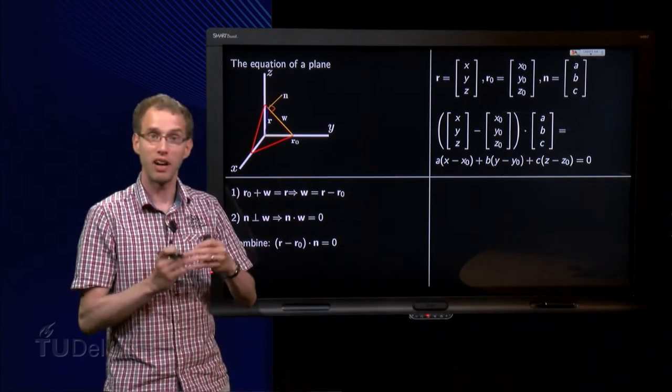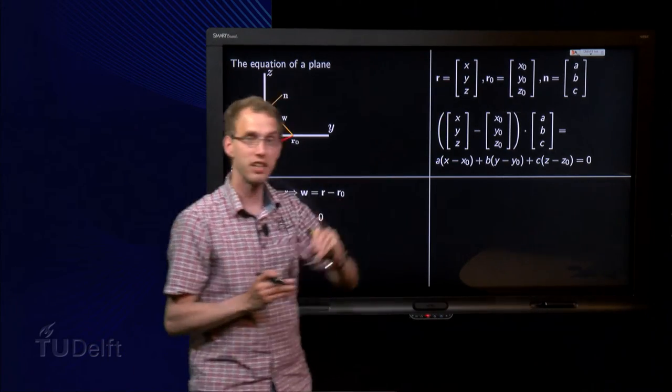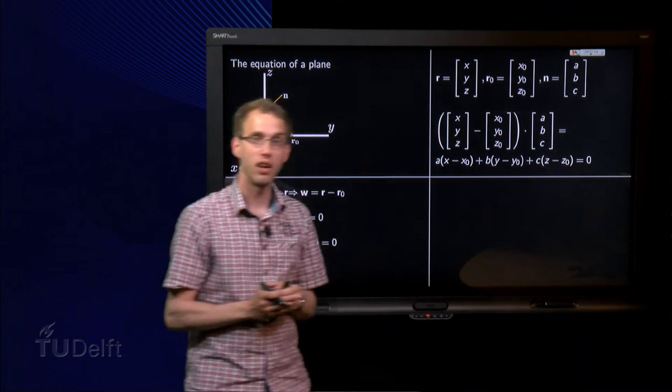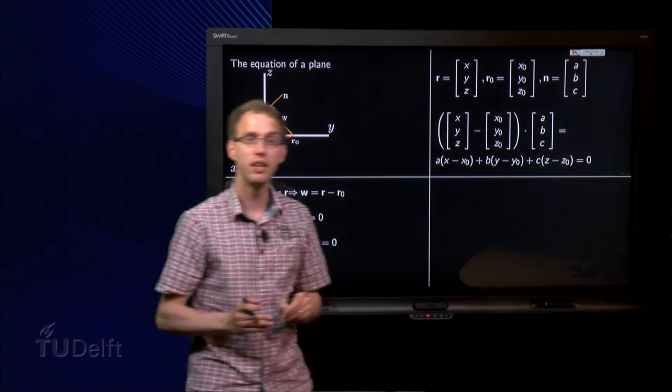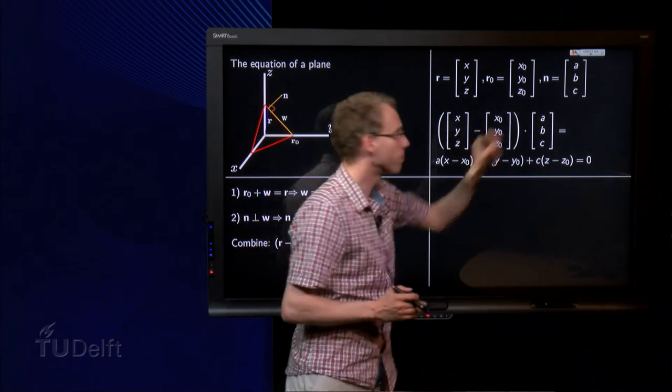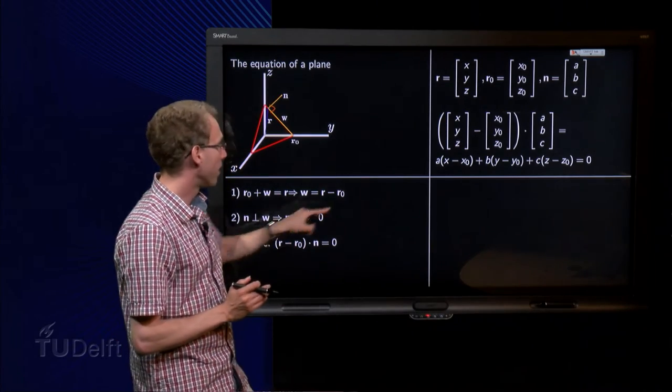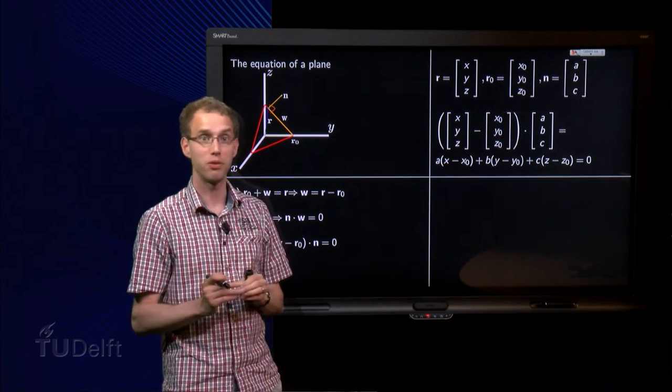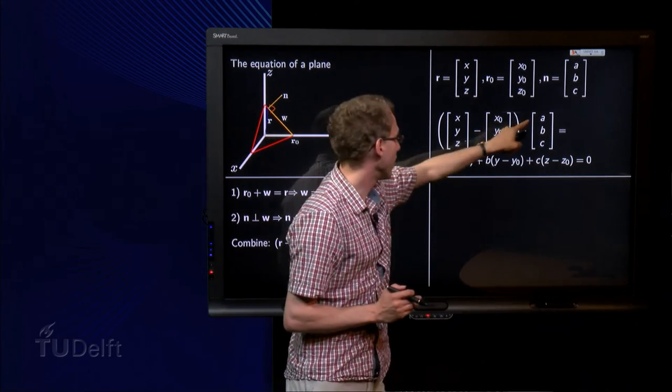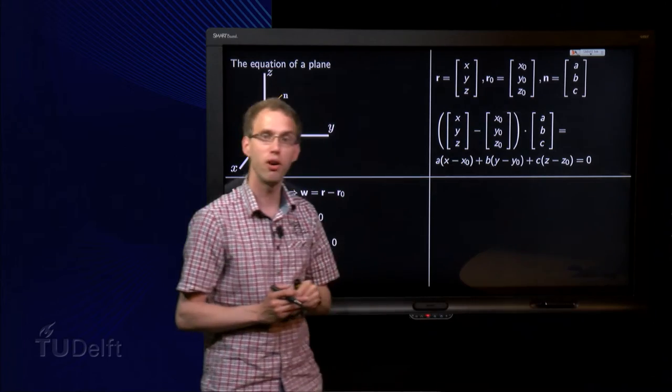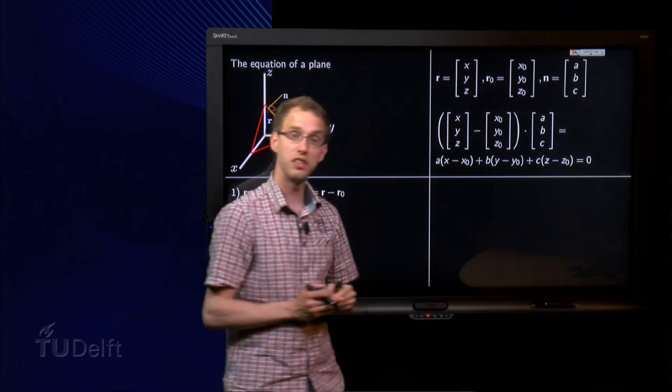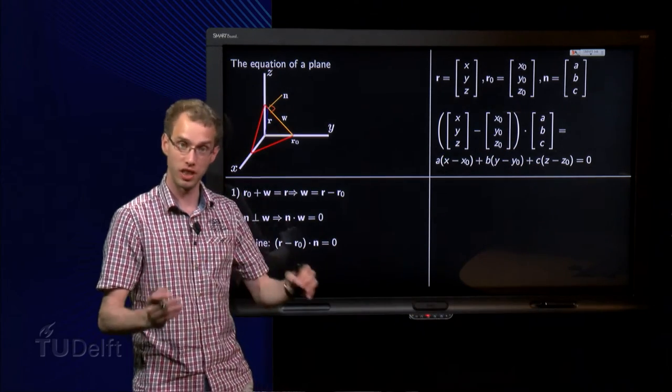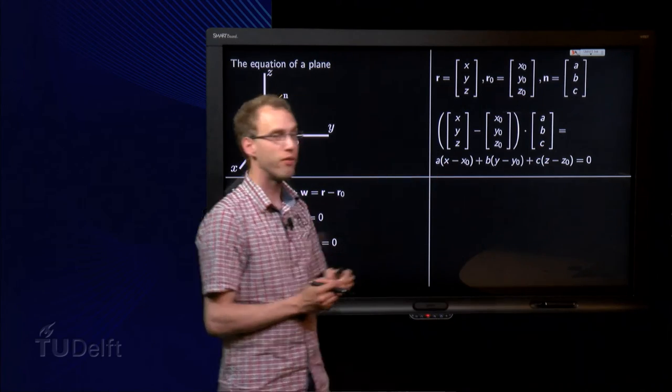Because if we write down r equals x, y, z, where x, y and z are arbitrary, fixed point r0, and normal n equals abc, so you need to know these two, then you can write down the inner product over here. r minus r0 inner product with abc has to be equal to 0. Work out the brackets, we get a times (x minus x0) plus b times (y minus y0) plus c times (z minus z0) equals 0. And here we have our equation of the plane.